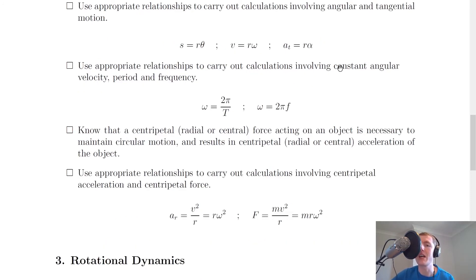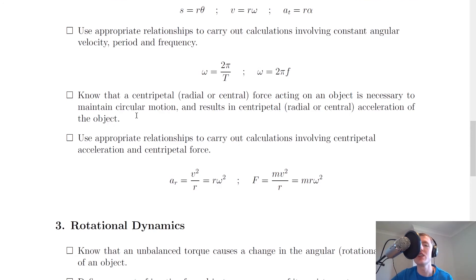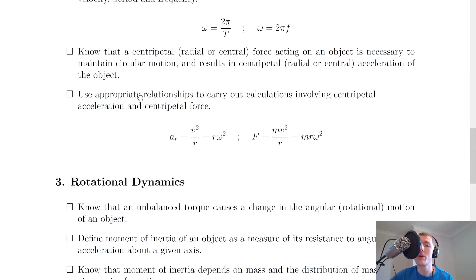Use appropriate relationships to carry out calculations involving constant angular velocity, period and frequency. If you know the period of circular motion you can work out omega, or vice versa. If you know the frequency or angular velocity you can use omega equals 2 pi f. You need to know that centripetal — also known as radial or central — force acting on an object is necessary to maintain circular motion and results in centripetal acceleration. Use appropriate relationships for centripetal acceleration: ar equals v squared over r, which equals r omega squared; and centripetal force: F equals mv squared over r, which equals mr omega squared.